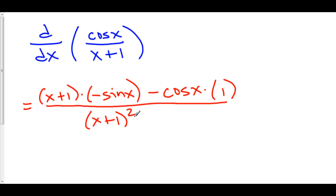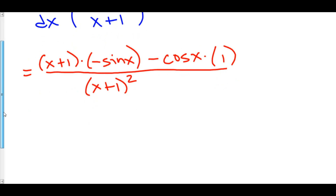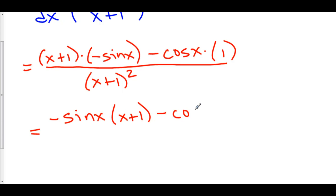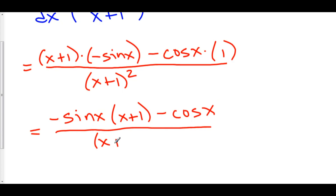Of course, here you could begin to make it look a bit nicer. We could, for example, put the negative sine of x in front of the x plus 1, minus cosine of x, and that's all over x plus 1 squared. And there we are — there's our derivative.